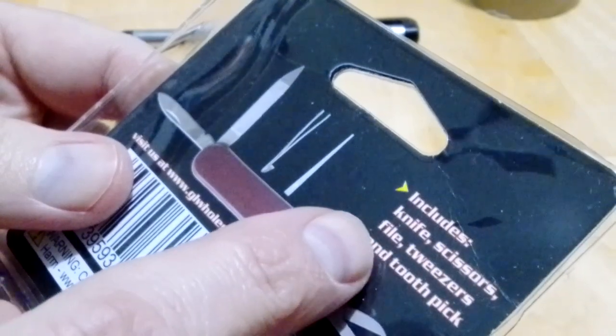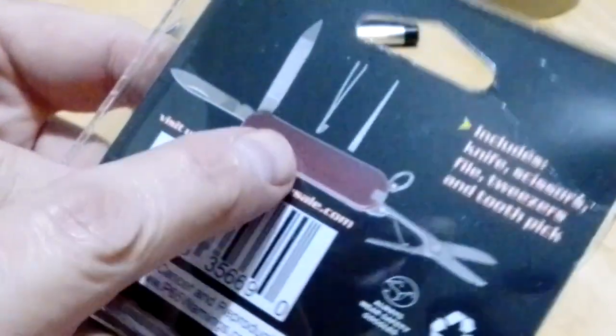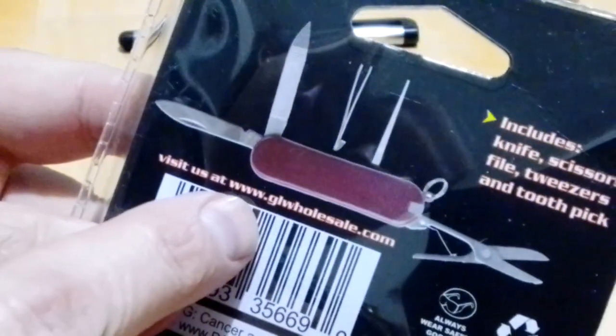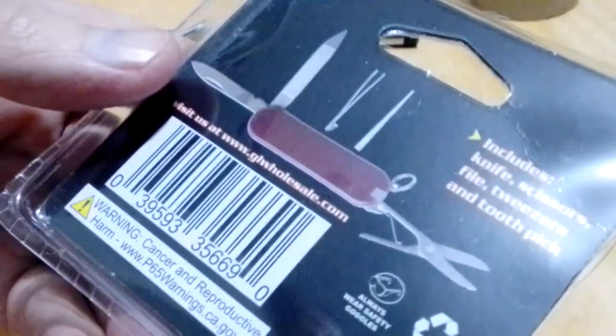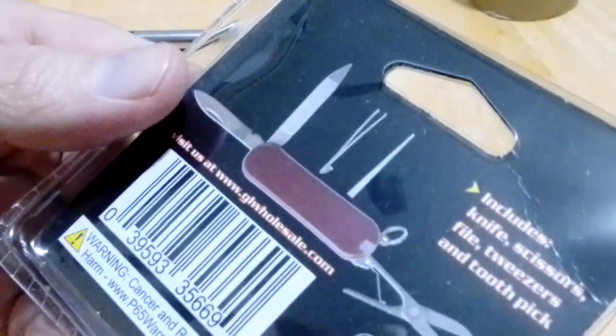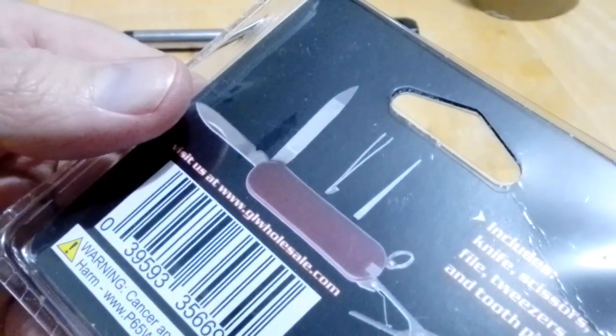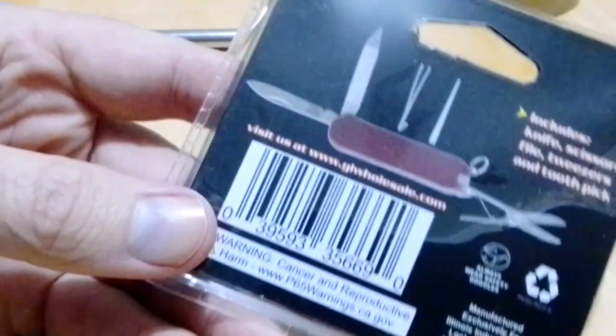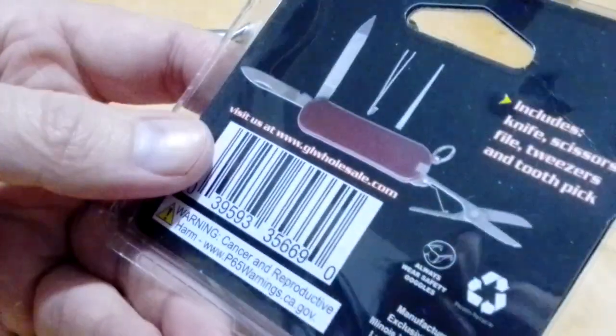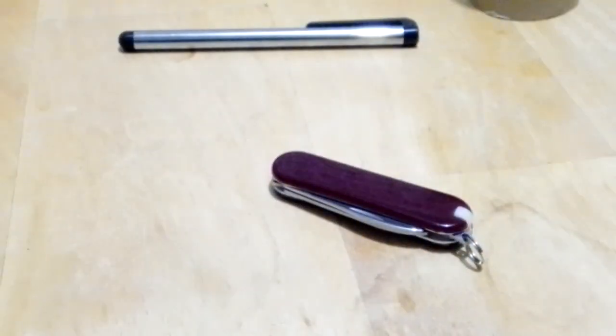It includes knife, scissors, file, tweezers, and a toothpick. You can see here all the different stuff. And this was $1.75, so it's not really super expensive. But I bought a couple just in case it was good. I don't want to get my hopes up too much, because a lot of times these different little Chinese sort of Swiss Army Knives are just terrible.